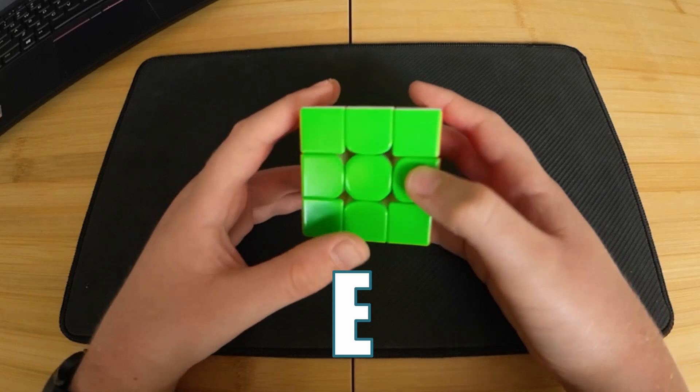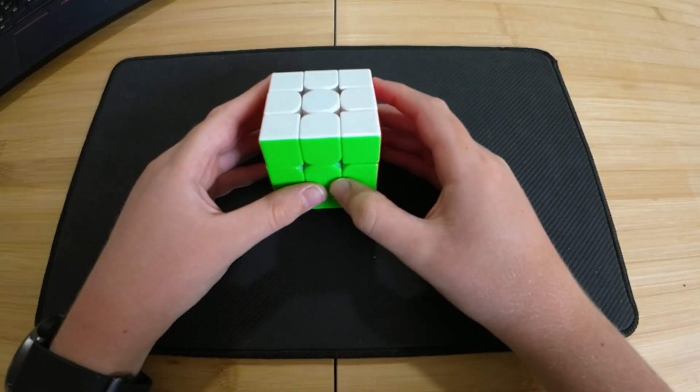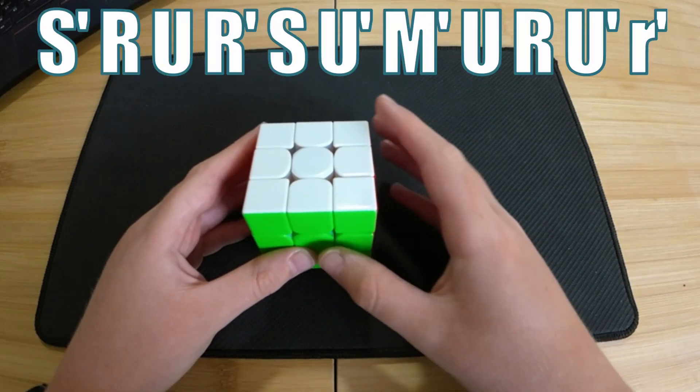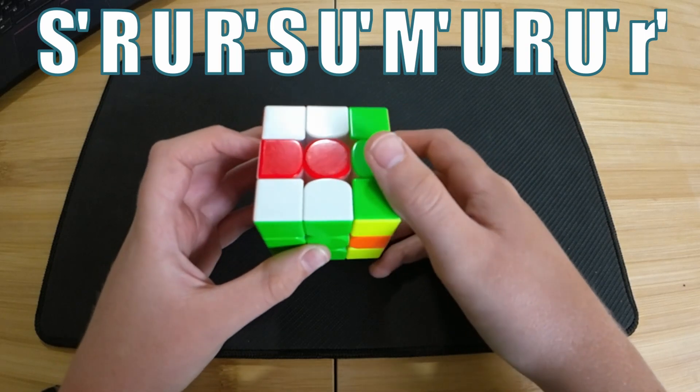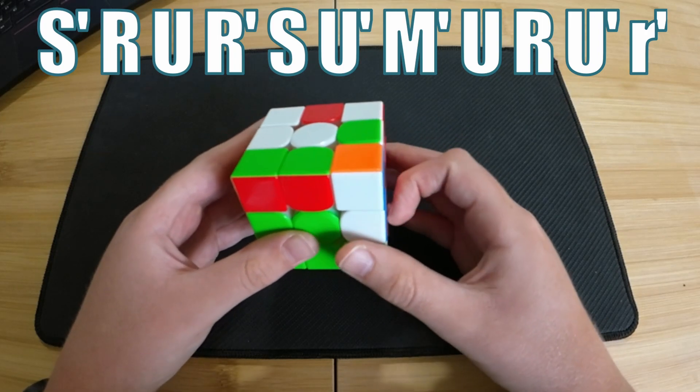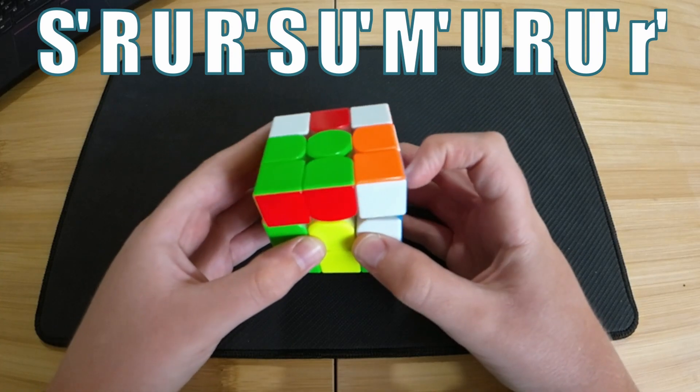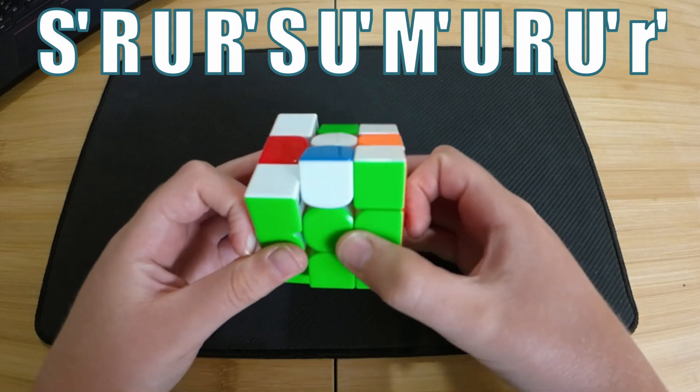Now let's do some examples using wide moves and slice moves. Let's do this algorithm together. S', R U R', S U', M', U R U', W R'.